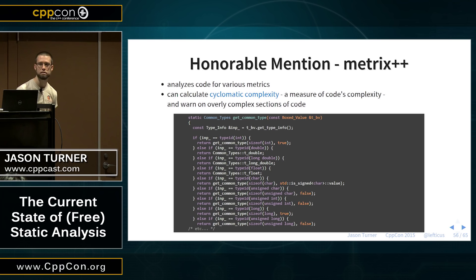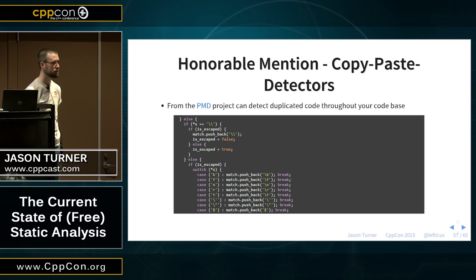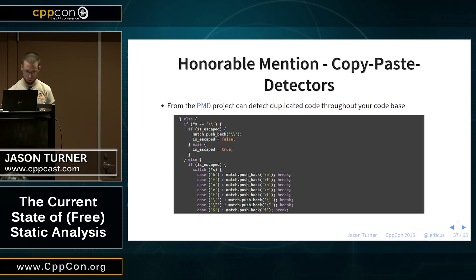Similarly, the copy-paste detector from the PMD project does static code analysis on a bunch of languages — none of them are C++ — but it has a sub-project called the copy-paste detector. It can analyze your code and tell you where you've done copy-and-paste programming. It found my character escape sequence parsing in ChaiScript that exists verbatim in two different parts of the library — I still need to clean that one up.